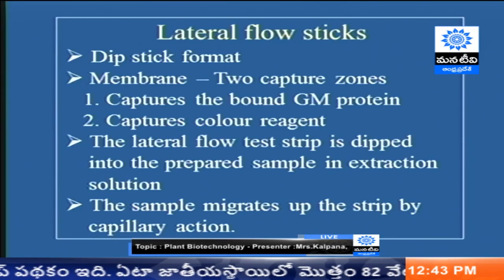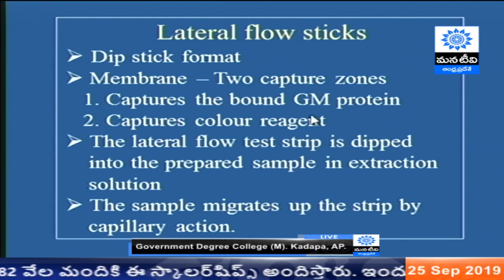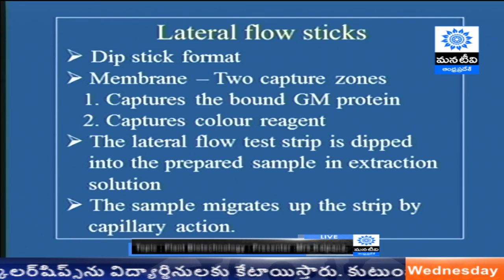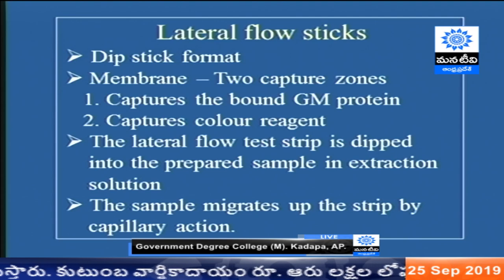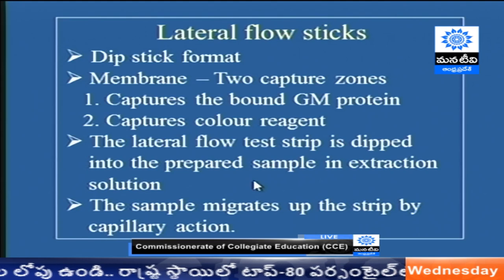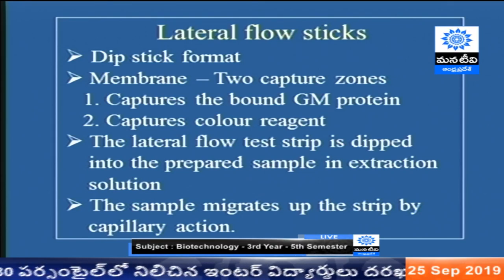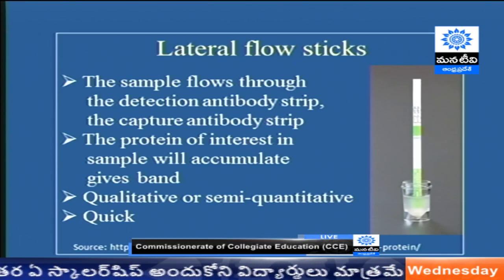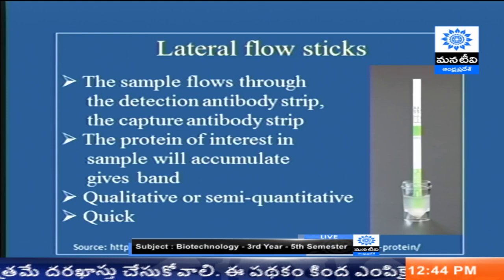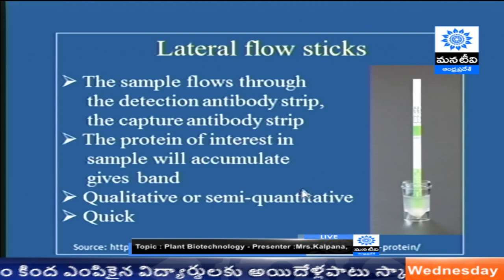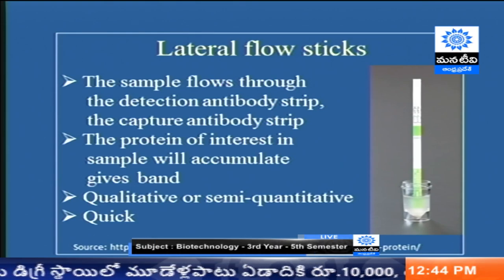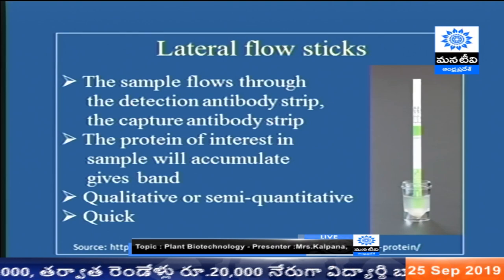The second method is lateral flow sticks — also known as the dipstick format — a membrane-structured format with two capture zones. The first captures the bound protein from the transgene; the second captures the color reagent. When we dip the lateral flow test strip in the extract prepared from plant cells, the sample migrates up the strip by capillary action through the detection antibody strip and the captured antibody strip. The protein of interest accumulates and gives a clear band. This is sometimes qualitative or semi-quantitative — quick compared to ELISA, but cannot specifically quantify the amount.